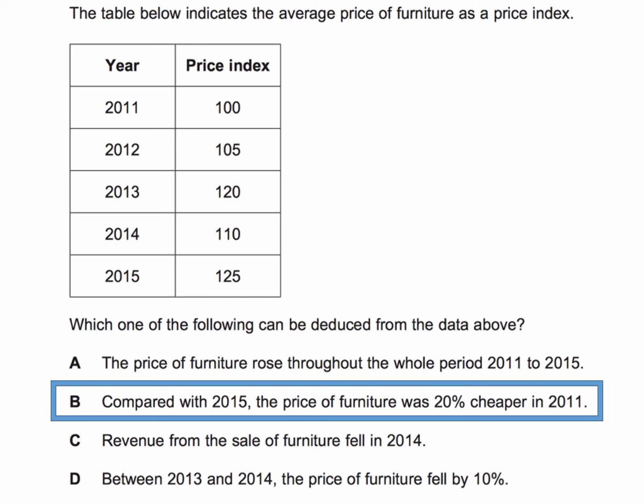Okay, let's go through the answer. When you get price data in index format, it's a good idea to calculate — when needed — a percentage change. Certainly one of the options requires it. The yearly percentage change is: the change divided by the original, multiplied by 100 — the change over the year divided by the original, multiplied by 100.